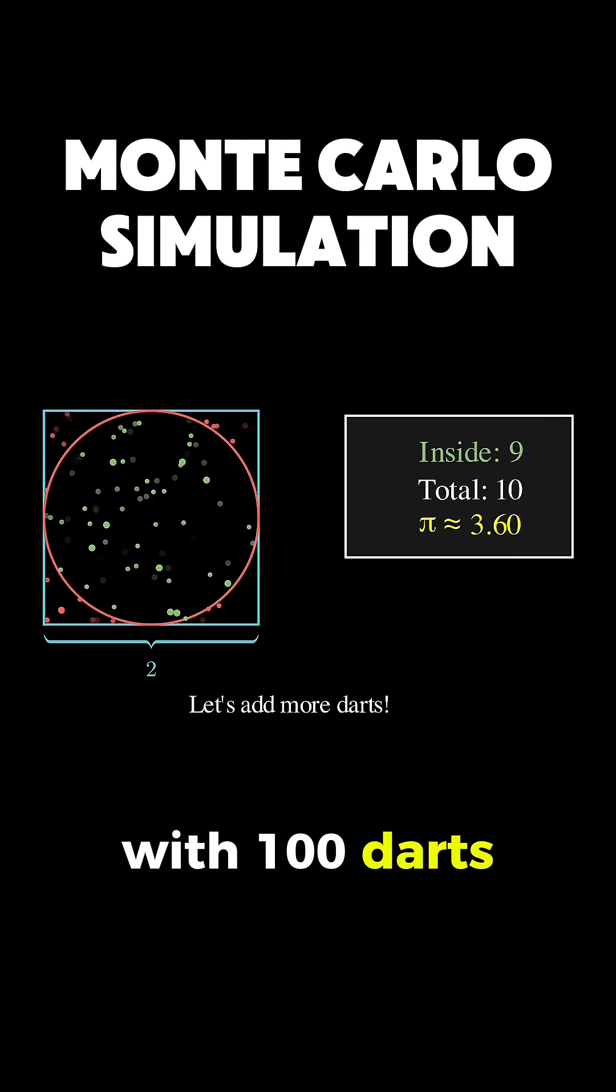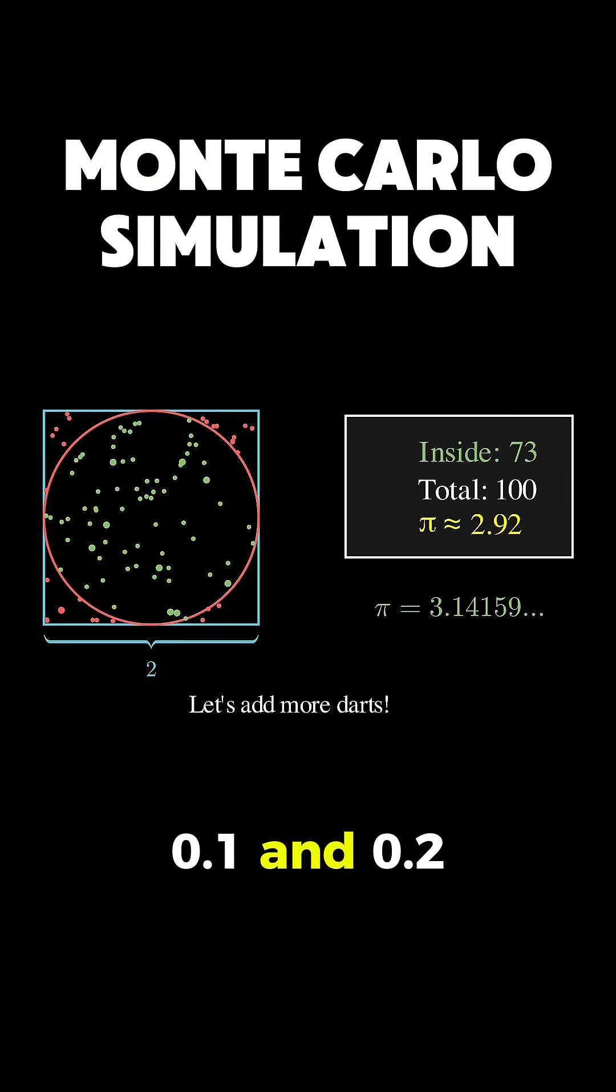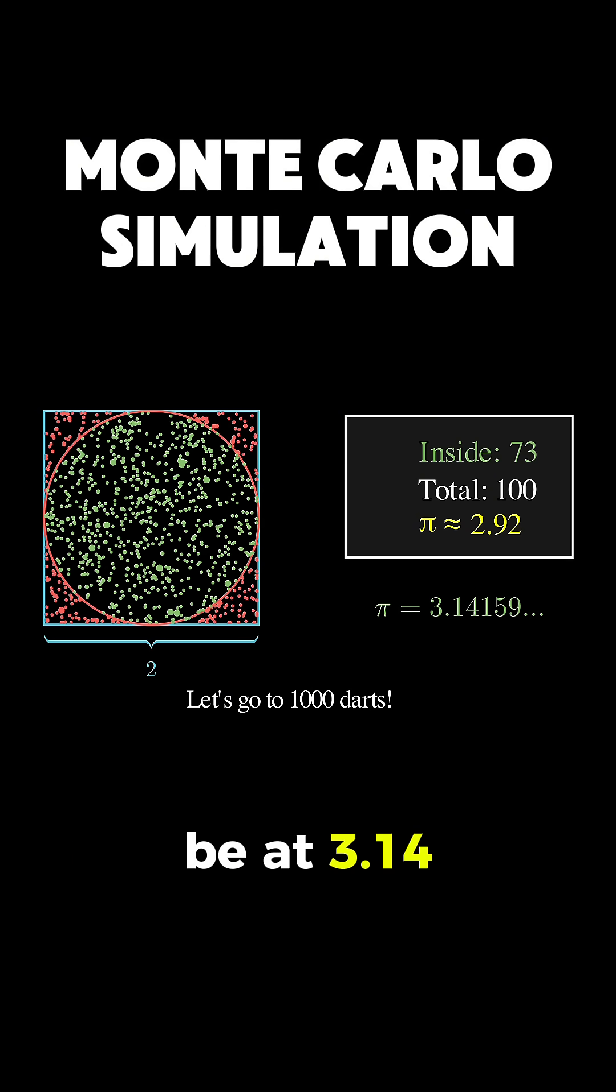With 100 darts, we're getting closer, probably within an error range between 0.1 and 0.2. And with 1000 darts, we might be at 3.14, incredibly close to the true value of pi.